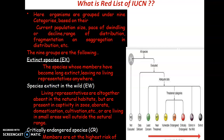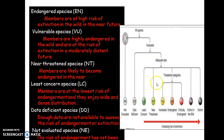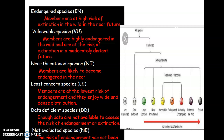Then comes Critically Endangered species, represented by CR, shown in red color. These are members which are at the highest risk of immediate extinction in the wild — they will become extinct imminently in their natural habitat. Then comes Endangered species, represented by EN. These members are also at the highest risk of extinction in the wild, but they will become extinct in the near future rather than immediately.